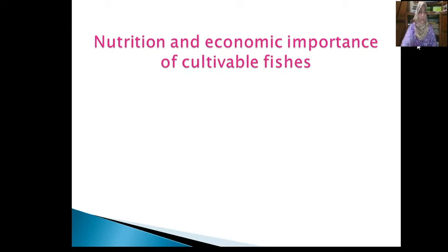The main cultivable fish types are: rui, katla, mrigel, silver carp, grass carp, tilapia, and Thai shalputi.